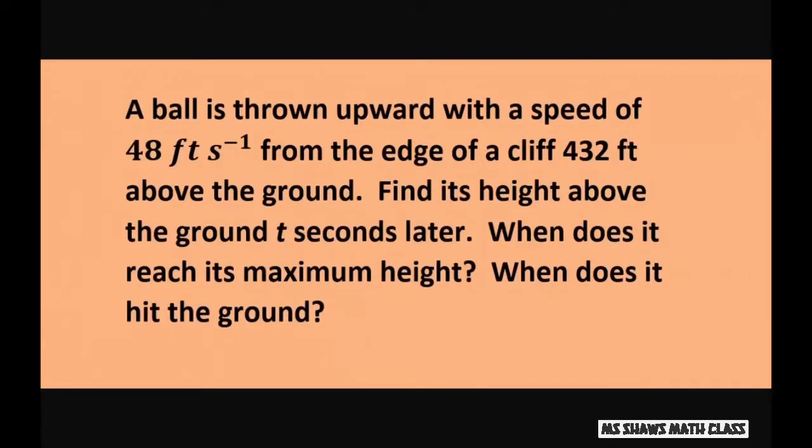Hi everyone! A ball is thrown upward with the speed of 48 feet per second from the edge of a cliff 432 feet above the ground. Find its height above the ground two seconds later. When does it reach its maximum height and when does it hit the ground?